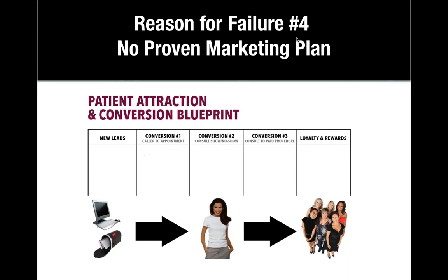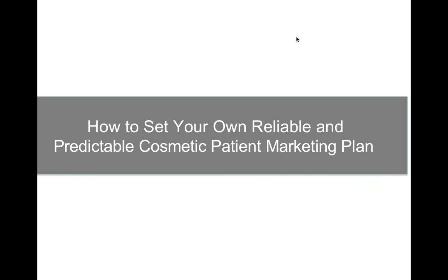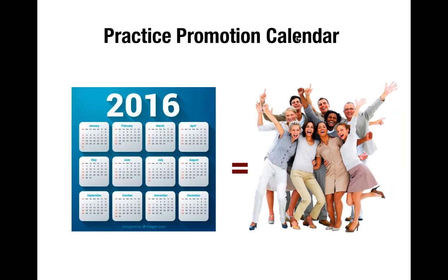I'm going to lay out exactly what you can do yourself — take a lot of notes — or, if you decide to get help and support, I'll offer our services to you. Here we go: how to set up your very own reliable and predictable cosmetic patient marketing plan, proven to get you results implemented right away. It starts with a practice promotion calendar. Your calendar tells you what goes out and when, giving you clarity and consistency. A well-planned calendar gives you predictable, systematic revenue and puts you in a position of confidence and power because you know money is coming in month after month.